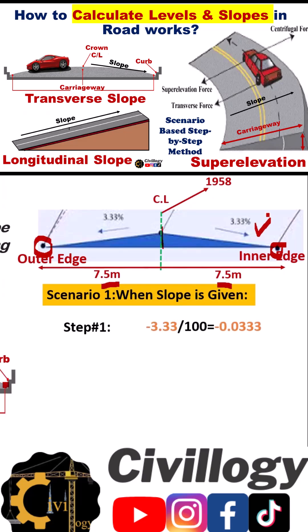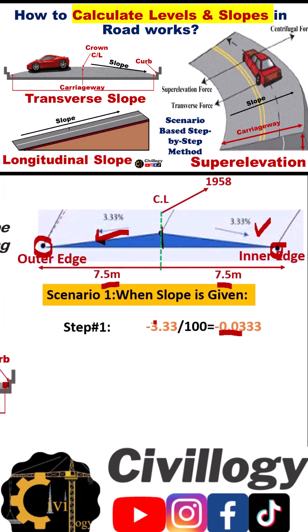Step number one: divide this percentage by 100 to get the decimal value. The minus sign indicates that the slope is downward or decreasing. The level given to us is 19.58, which is the level of the centerline of the road.